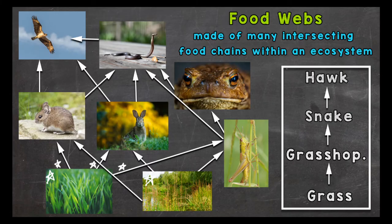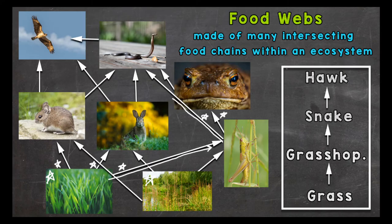Let's follow the arrow over to the grasshopper — the flow of energy shows the grasshopper consumes that grass. Over at the grasshopper you'll notice two arrows going from it, meaning two organisms eat or consume the grasshopper: the frog and the snake. Let's follow the flow of energy to the snake, so the snake consumes the grasshopper. From the snake we see one arrow going over to the hawk, so the hawk consumes the snake.